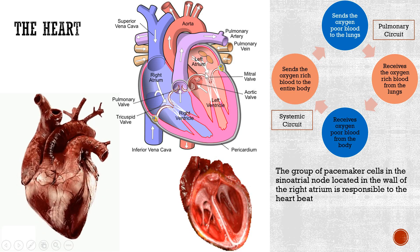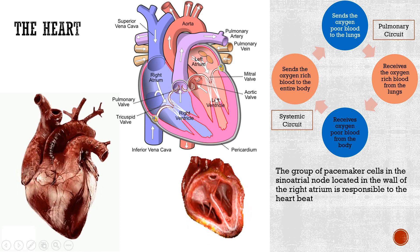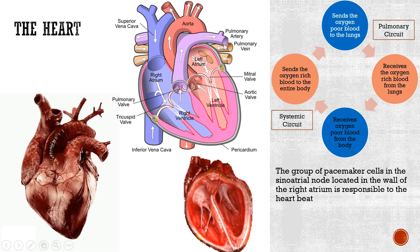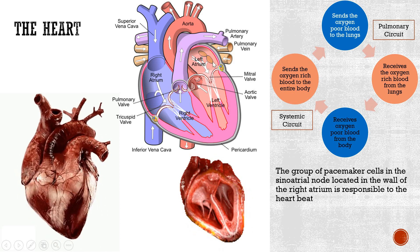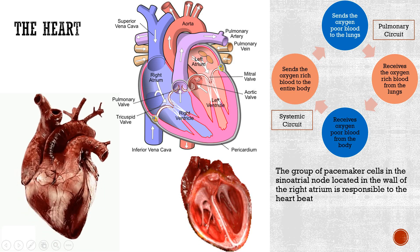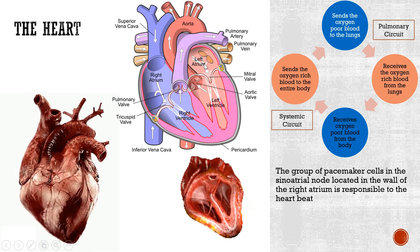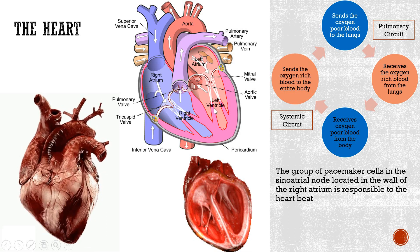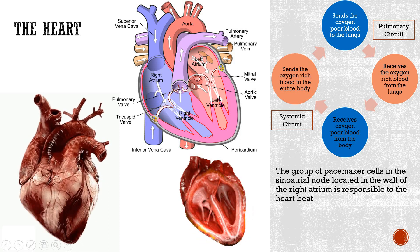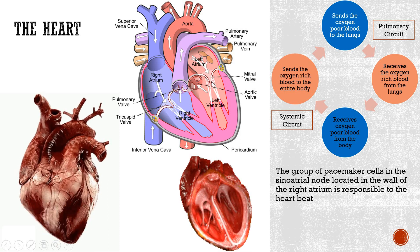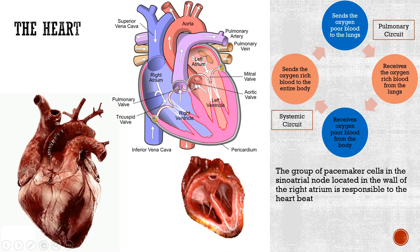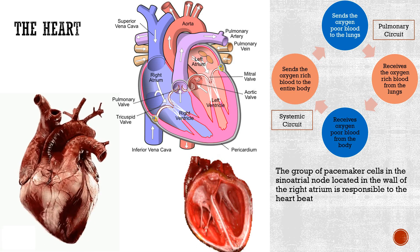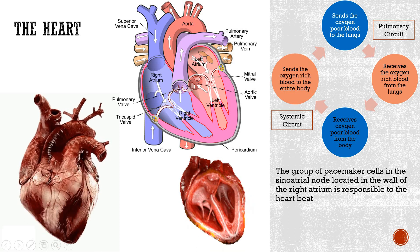Simultaneously, on the left side, oxygen-rich blood from the lungs enters the left atrium through the pulmonary vein. The mitral valve forms the boundary between the left atrium and left ventricle. When the left atrium contracts, the mitral valve opens and blood is pumped into the left ventricle. Then the left ventricle contracts, the mitral valve closes, and the blood is pumped out through the aortic valve and carried to the entire body through the aorta.